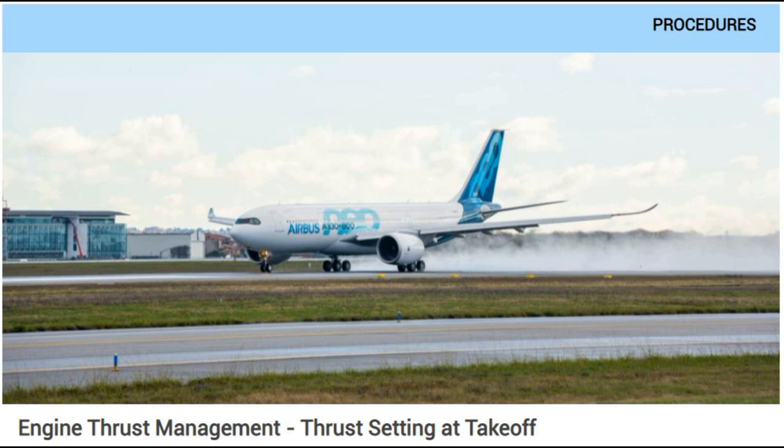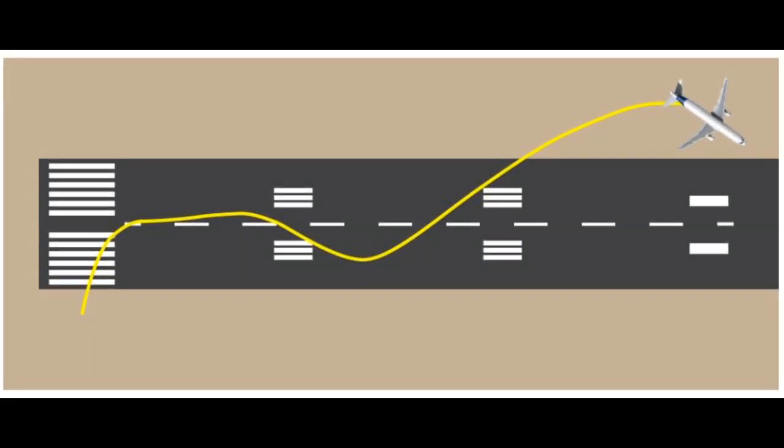The event concerned an A320 runway excursion on takeoff due to an asymmetric thrust condition which led to a loss of directional control. It stresses the importance of the two-stage thrust application from idle up to the stabilization of 50 percent. There will be some differences between CFM and IAE engines. This particular aircraft had IAE engines, so the references are to EPR, but the takeaways are exactly the same. It's just the importance of that stabilization stage.